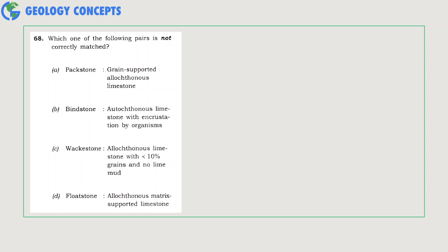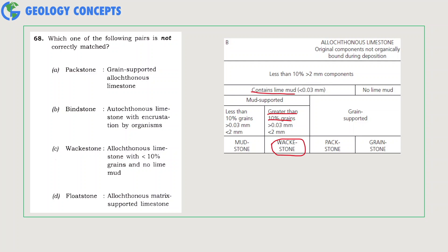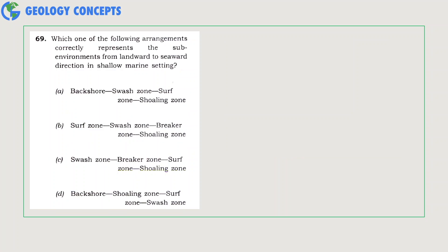Which one of the following pairs is not correctly matched? As you can see from the allochemical limestone classification, wackestone contains greater than 10% grains along with some lime mud. Hence, option C here is not correctly matched. According to the question, C will be the right answer. Wackestone contains greater than 10% of the grains.